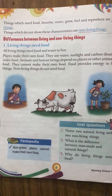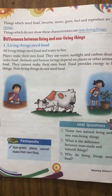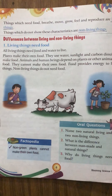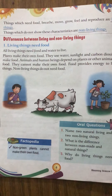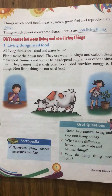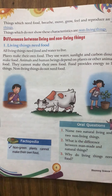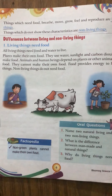First point: living things need food. All living things need food to live. Living things can breathe, move, grow, feel, and reproduce. We humans, animals, birds, fish, and insects — we all are living things, and living things need food.